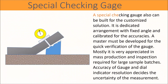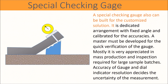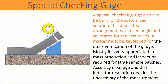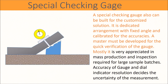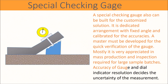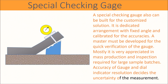A special checking gauge can also be built for a customized solution. It is a dedicated arrangement with a fixed angle and calibrated for accuracies. A master must be developed for quick verification of the gauge. This is mostly appreciated in mass production and inspection of large sample batches. The accuracy of the gauge and dial indicator resolution determines the uncertainty of the measurement.